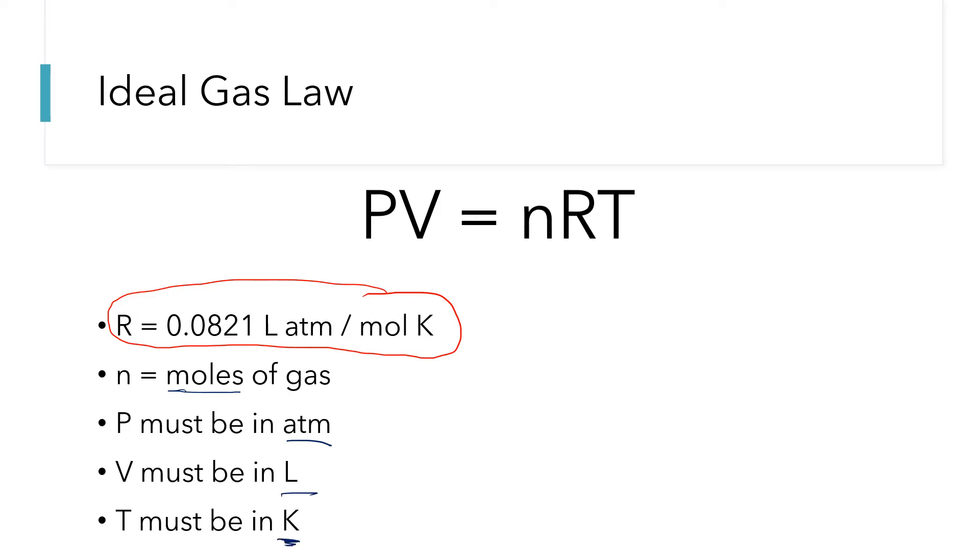When we were doing combined gas law type problems, P and V didn't matter as long as they were in the same units on both sides. But when we're doing the ideal gas law and we're using this ideal gas law constant value of 0.0821, we must use these units for our variables.